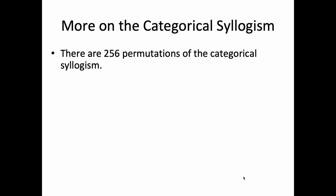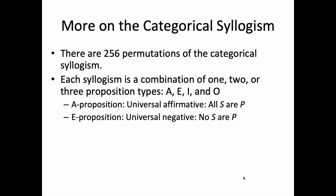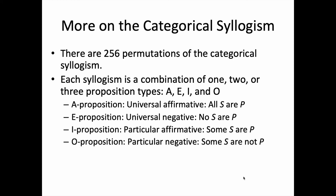Here are a couple more things to think about when considering the categorical syllogism. There are 256 permutations of the categorical syllogism. Each syllogism is a combination of one, two, or three proposition types — that is, either iterations of an A, E, I, or O proposition, or some combination thereof. The A proposition is the universal affirmative, the E proposition is the universal negative, the I proposition is the particular affirmative, and the O proposition is the particular negative.